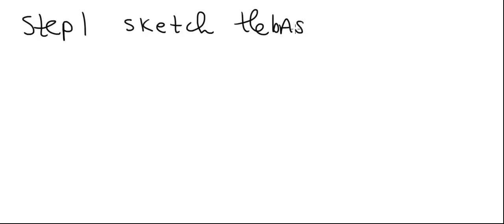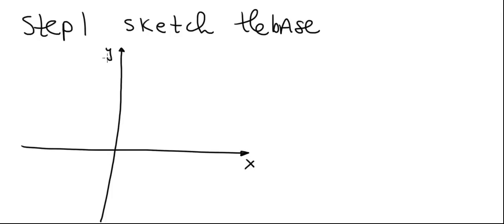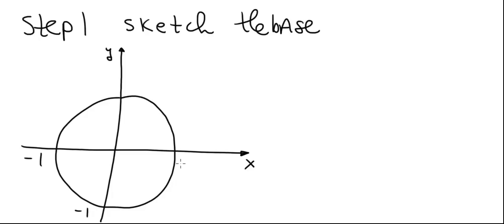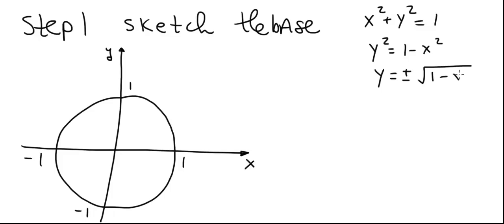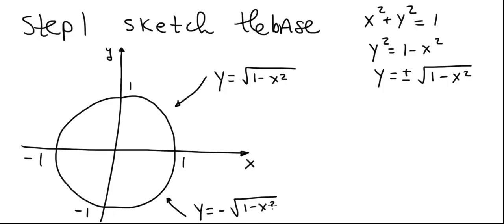Step 1: we want to sketch the base. Sketching the base is easy because it's just a unit circle, so the base is on and inside the circle. This is what the base looks like, with coordinates at -1 and 1 on both axes. We take the unit circle x² + y² = 1 and solve for y: y² = 1 - x², so y = ±√(1 - x²). The upper semicircle has the equation y = +√(1 - x²) and the lower semicircle y = -√(1 - x²).